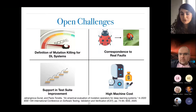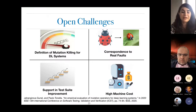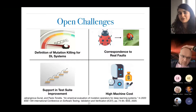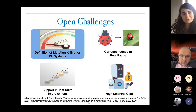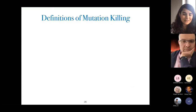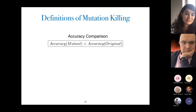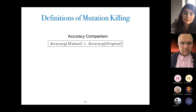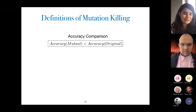Lastly, there is the high machine cost challenge. Mutation testing is already expensive, but for deep learning systems it comes from the need to retrain the model for each mutation operator. If your model takes a long time to train, this becomes very impractical. Addressing the definition of mutation killing: in existing works, the most common definition is a decrease in accuracy — if the mutant has a lower accuracy than the original, it's considered killed.